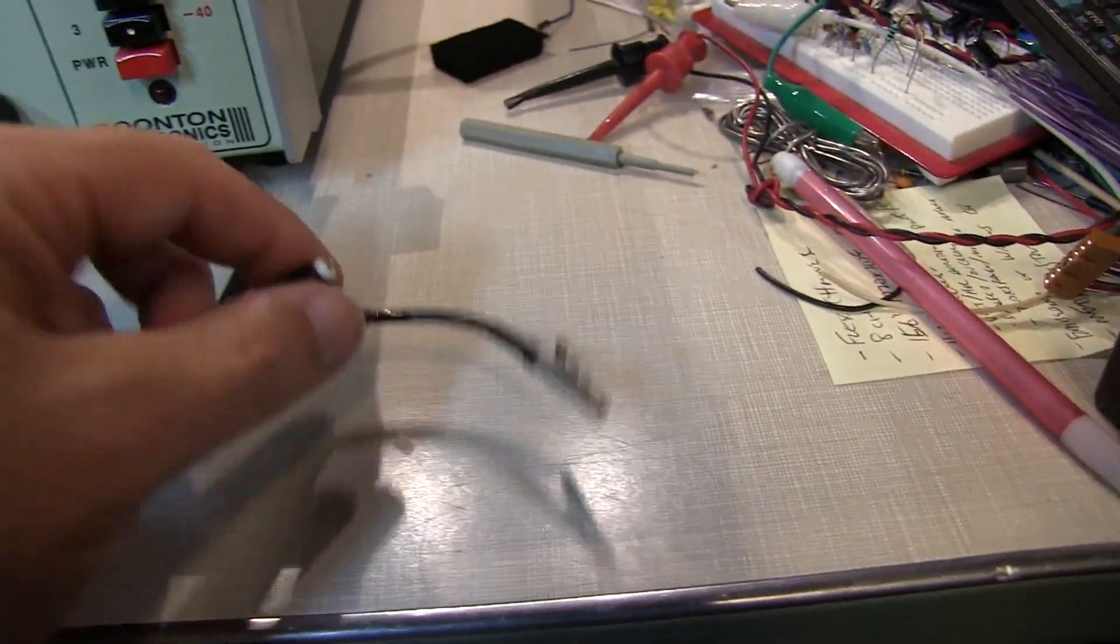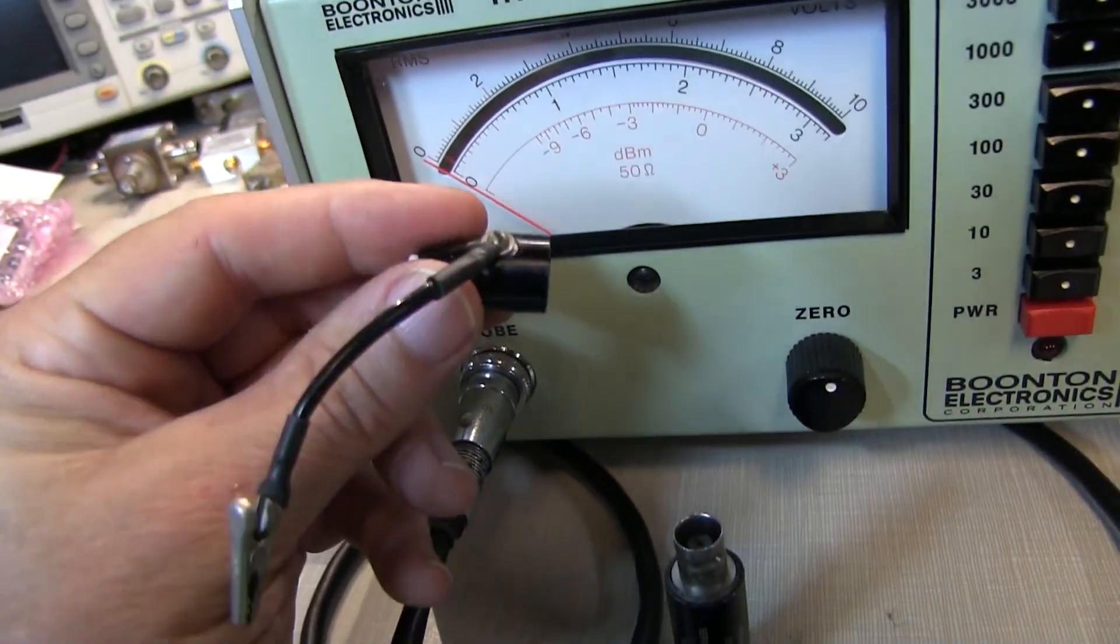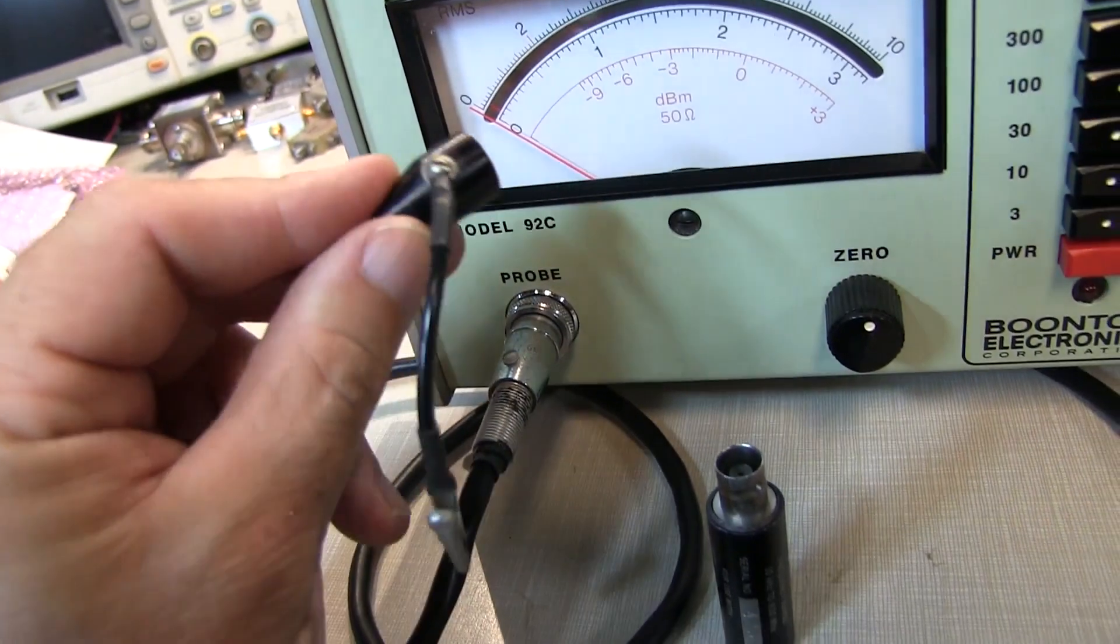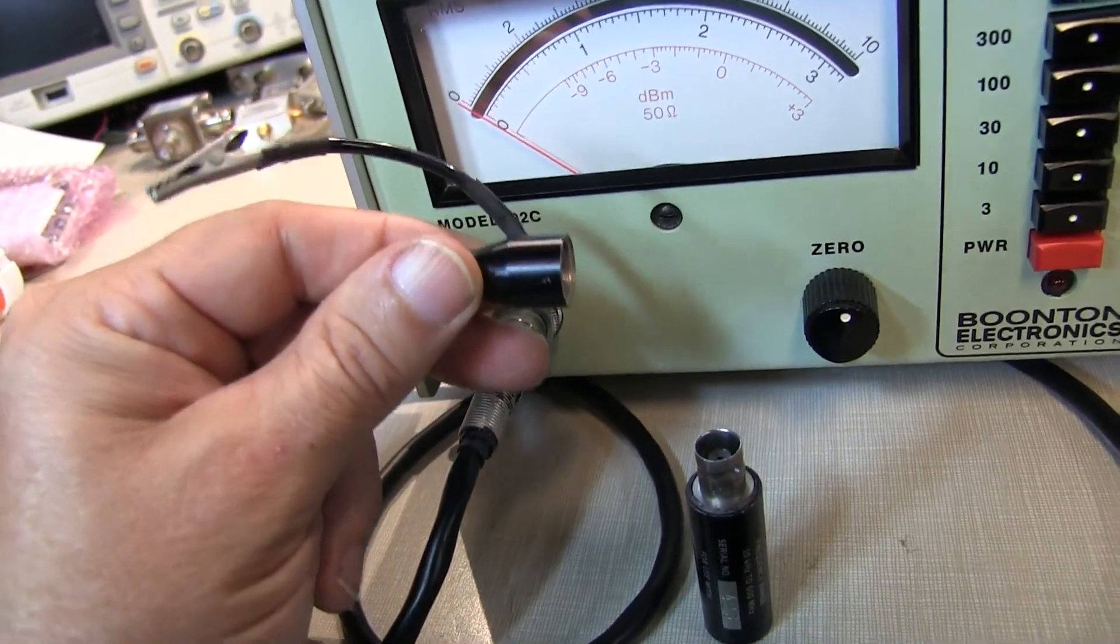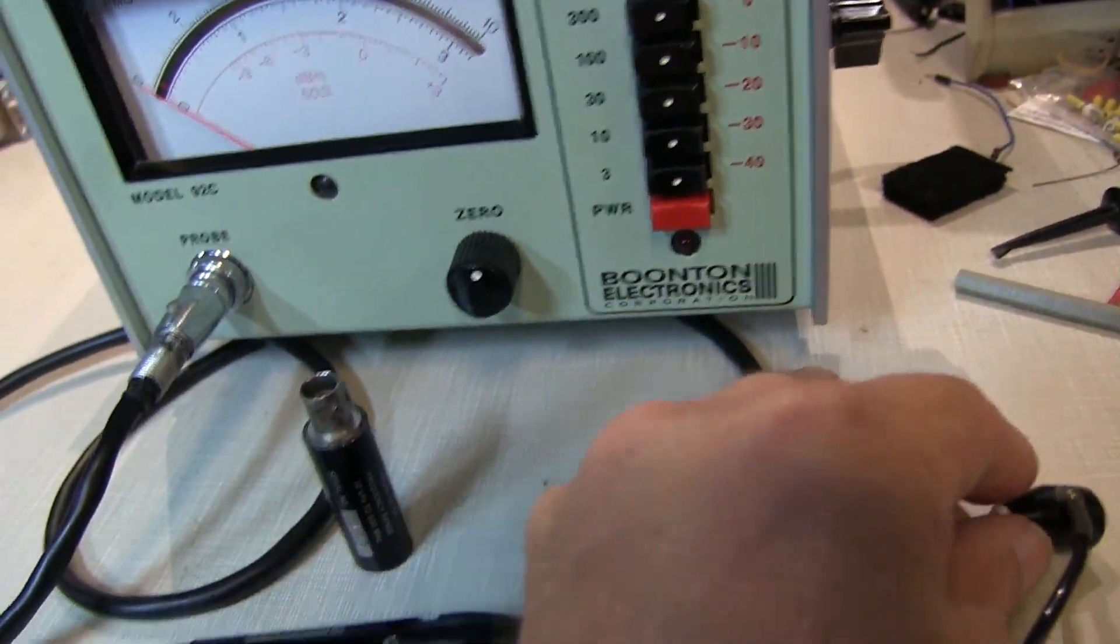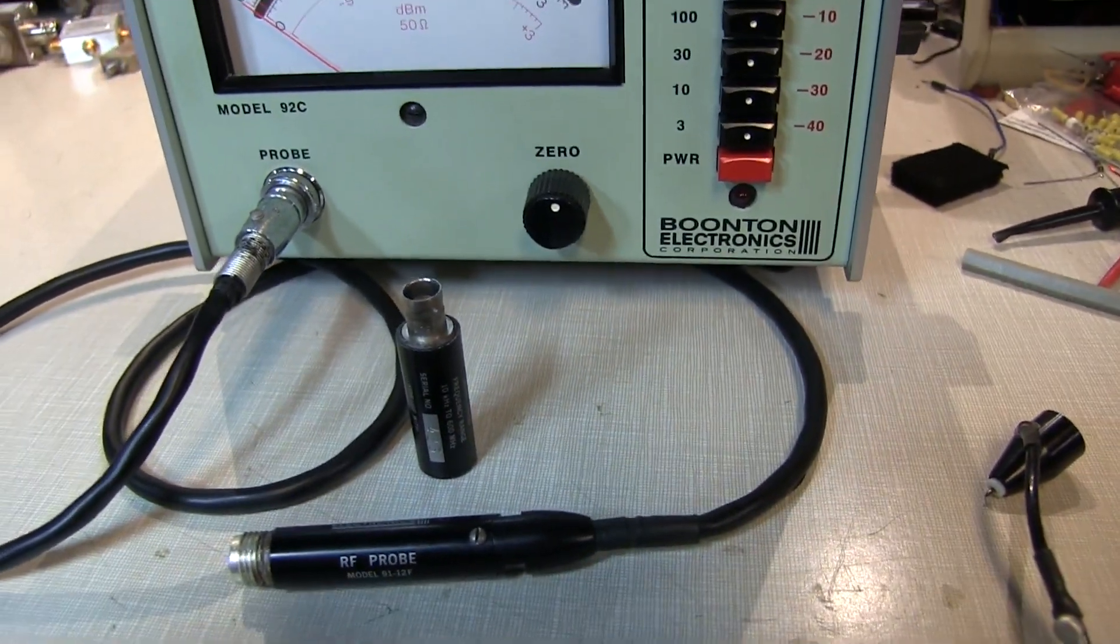And then the meter also comes along with, or the probe comes along with this, just a flying probe adapter. And with this ground lead on there, this is usable up to about 100 megahertz or so, while with the 50 ohm adapter we're good to a little over 1.2 gigahertz.